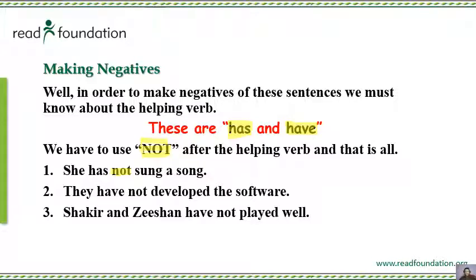For a negative sentence, the structure is: Subject + Helping Verb + Not + Third Form of Verb + Object. For example: 'They have not developed the software.' Another example: 'Shakir and Zishan have not played well.' Simple.